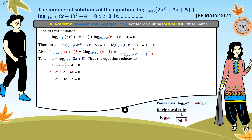Rearranging gives the quadratic equation t² - 3t + 2 = 0. By middle term factorization, this factors as (t - 2)(t - 1) = 0, giving t = 1 or t = 2. Therefore the possible values of t are 1 and 2, meaning log(2x+5) with base (x+1) equals either 1 or 2.